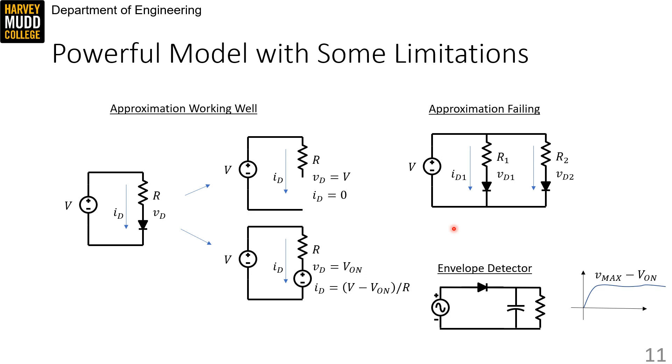So if we used this approximation on the circuit in the upper right, it would predict that VD1 and VD2 are both about 0.7 volts, which is true, but it's not helpful if you care about the difference between VD1 and VD2. So be careful of using this model if you care about small differences between multiple diodes in a circuit.